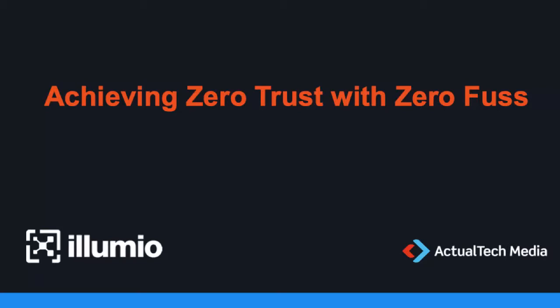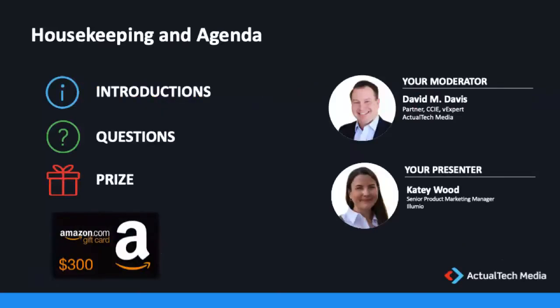Before we get started, we have a little bit of housekeeping to cover. We want this to be a very educational event — we want you to learn a lot about zero trust and micro-segmentation, and because of that, we encourage questions throughout the event. Just use the GoToWebinar questions box, and we'll be answering those throughout. We also encourage you to use the handouts available in the GoToWebinar console: the definitive guide to micro-segmentation and an Illumio solutions brief on how to achieve zero trust. Just click on them and they will automatically download for you.